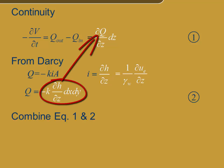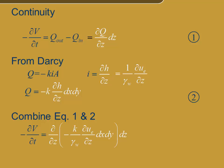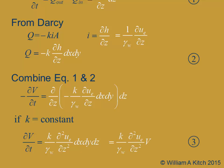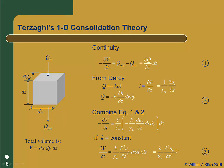Now we'll combine equations one and two by substituting Darcy's equation for q into the differential in equation one, which gives us a new differential equation. With our assumption that the soil is homogeneous and isotropic and its properties don't change during consolidation, we can pull both k and gamma water out of the differential. We'll have the partial of v with respect to time equal to k over gamma water times the second partial of excess pore pressure with respect to z, all times dx dy dz. Since dx dy dz is just the volume v, we get dv/dt equals k over gamma w times the second partial of u_e with respect to z times v. This is the third equation.